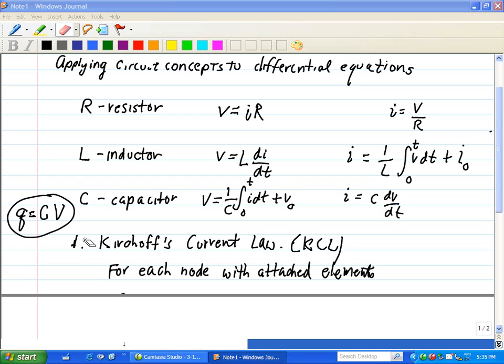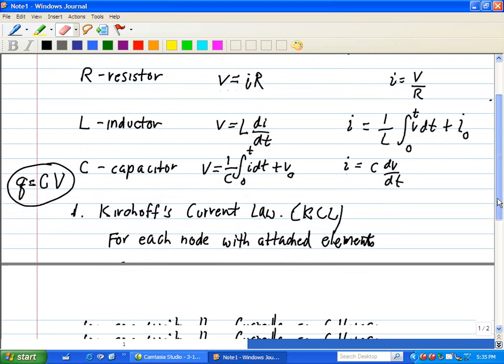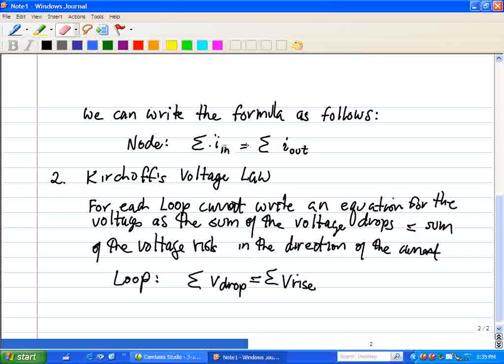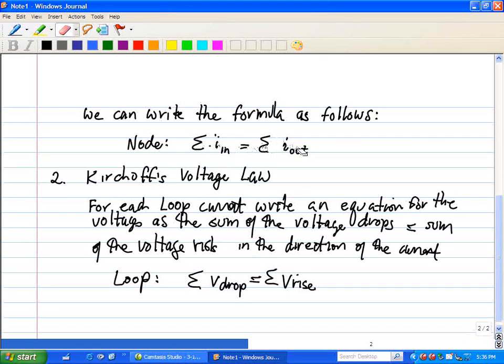The first law that we're going to look at is KCL, or Kirchhoff's Current Law. It says that for each node with attached elements, the incoming currents is equal to the outgoing currents. The summation of the incoming currents is equal to the summation of outgoing currents. This is like a conservation of charge in which no charges can be accumulated throughout the circuit.